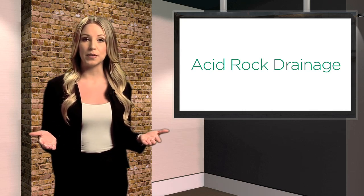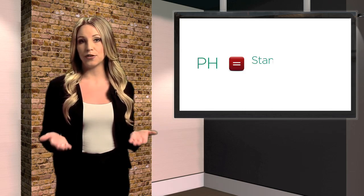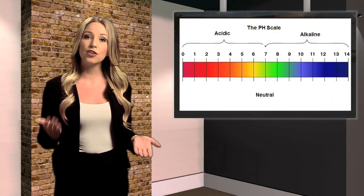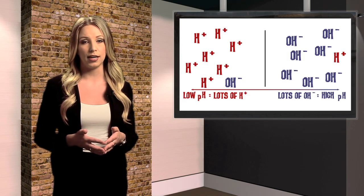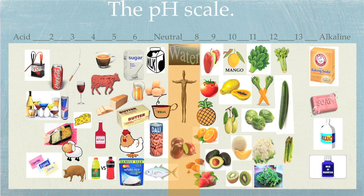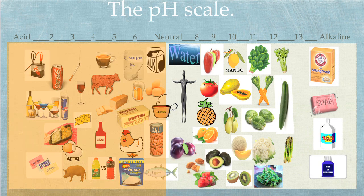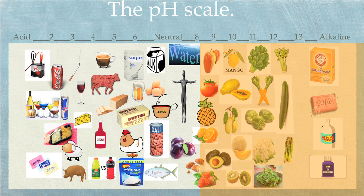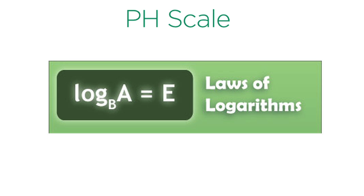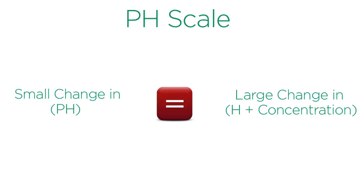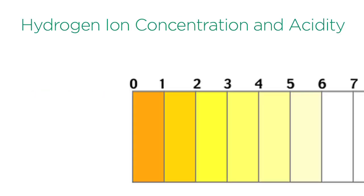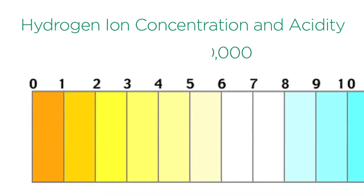Let's begin by defining some terms like pH, the standard measure of acidity. The pH scale actually measures hydrogen ion concentration in water solutions. Pure neutral water has a pH of 7, acids have a pH less than 7, and alkaline solutions a pH greater than 7. Like the decibel scale for noise, the pH scale is logarithmic — a small change in pH represents a large change in H+ concentration. pH 1 has a hydrogen ion concentration and acidity 1 million times higher than pH 7.